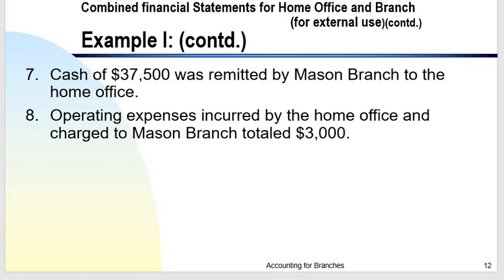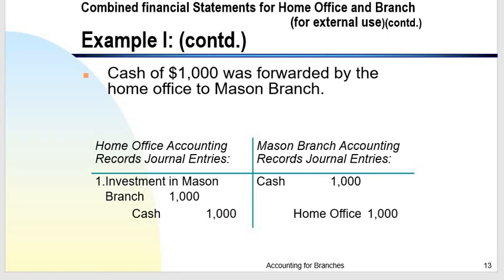First transaction: cash of $1,000 was forwarded by the home office to Mason Branch. This is an asset transferred from the home office to the branch. The home office entry is: debit Investment in Mason Branch, credit Cash. The branch entry is: debit Cash, credit Home Office.